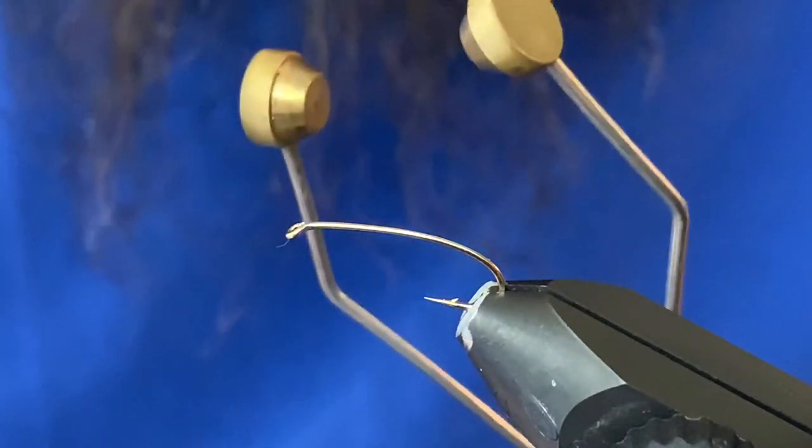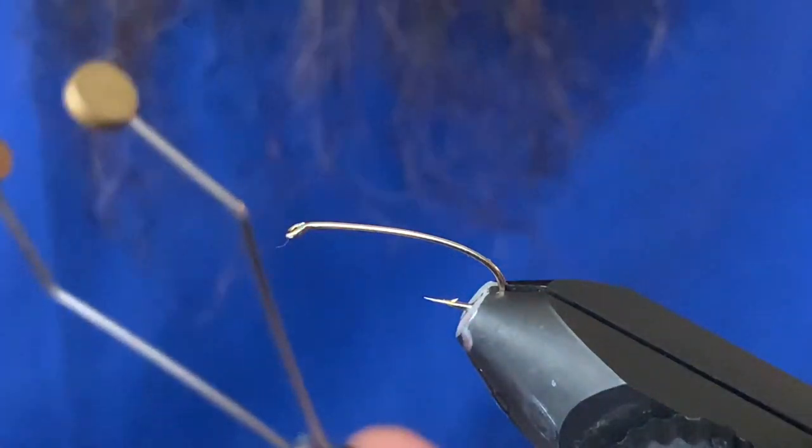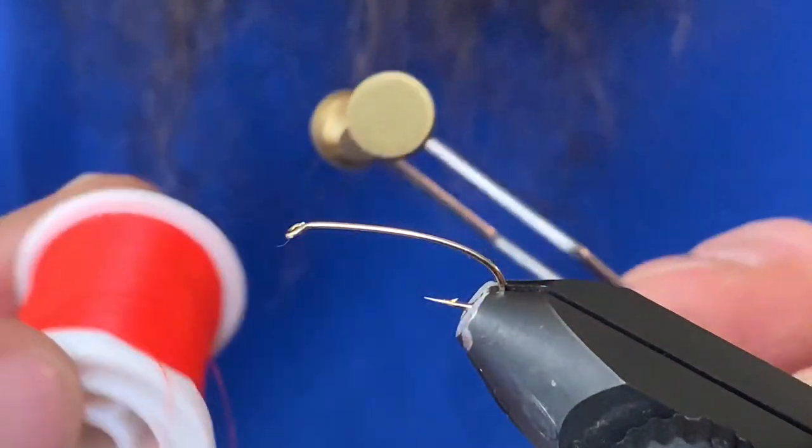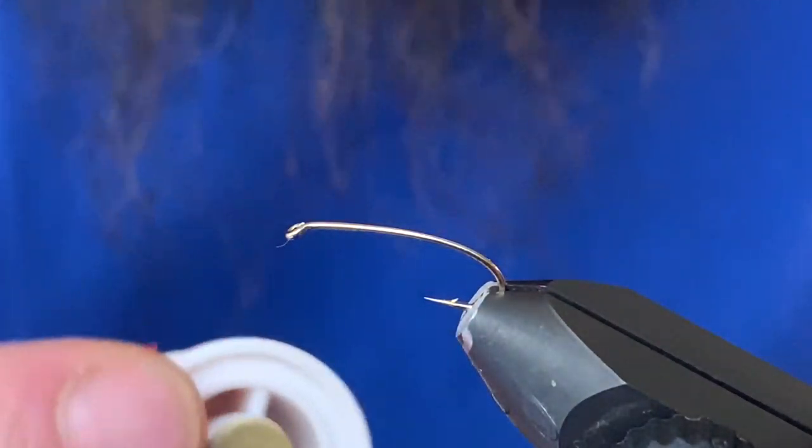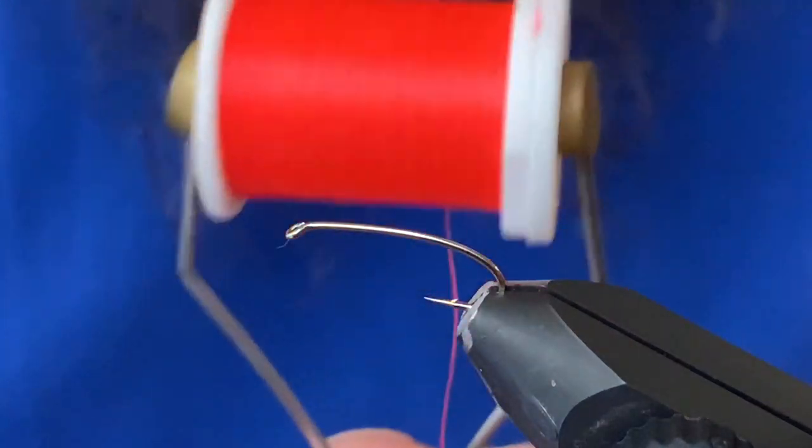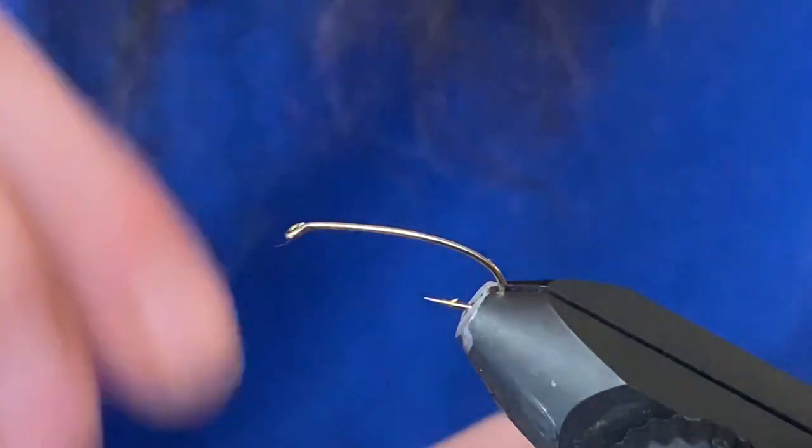So first thing we're gonna show you is just how to load a bobbin and how to get your thread started on the hook. So I've got my bobbin here and just a spool of thread, so we're going to pop that thread into the bobbin so that the two holes are fitted.